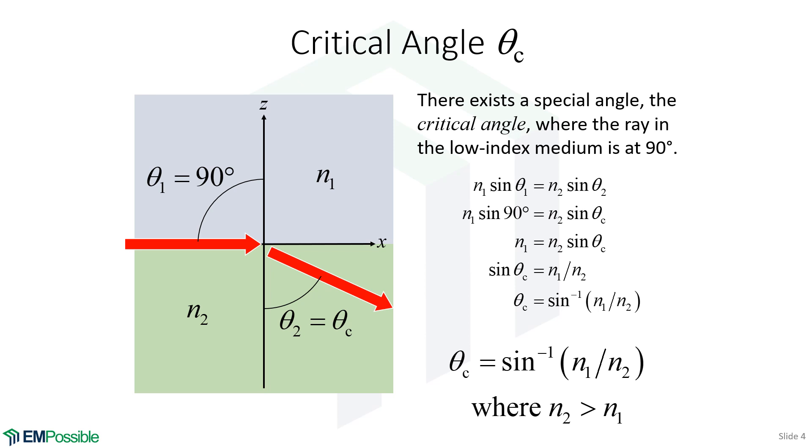We can derive an expression for the critical angle by setting theta 1 to 90 degrees. Then we can calculate this other angle, because with theta 1 at 90 degrees, we have the critical angle for theta 2. Here's our final expression for calculating critical angle.